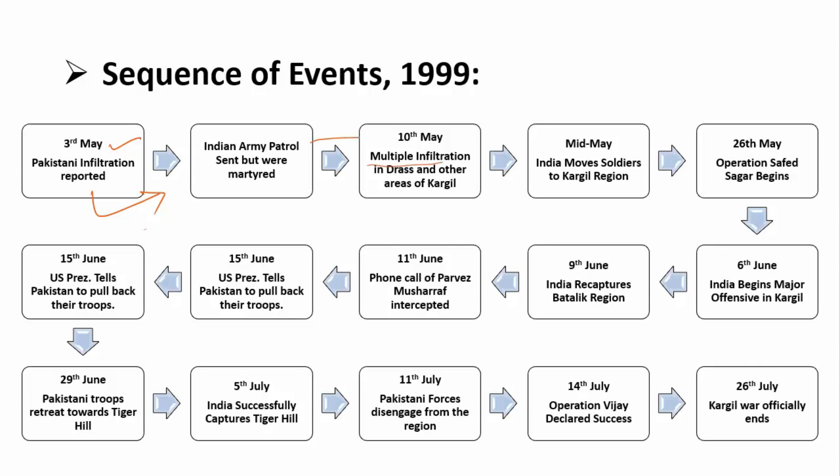By 10th May, there were multiple infiltrations in the Dras region. In response, in mid-May, the Indian Army deployed many soldiers and moved them to the Kashmir Valley. After 26th May, Operation Safed Sagar started, which was managed by the Indian Air Force. India then began tackling many offensive situations in the area.